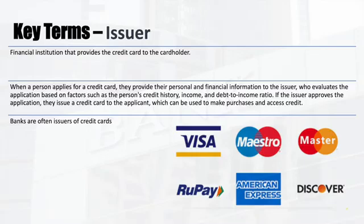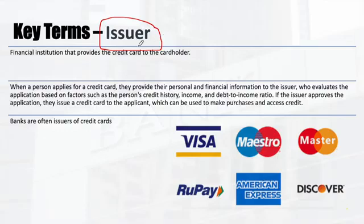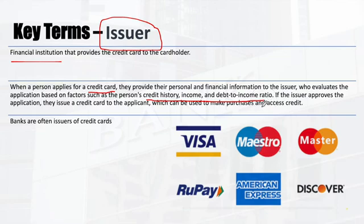Before we start, let's see some key terms useful for understanding the flows later. The issuer is the bank which issues the credit or debit card. Specifically for credit cards, when you apply, the financial institution checks your credit history, income, and debt-to-income ratio, and based on your profile they approve a specific credit limit and issue or deny a credit card.